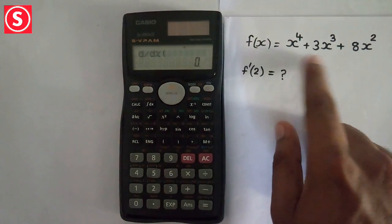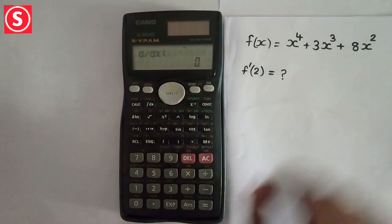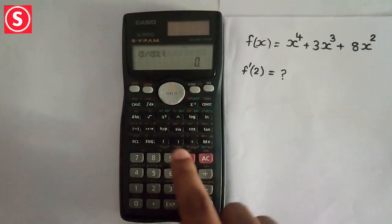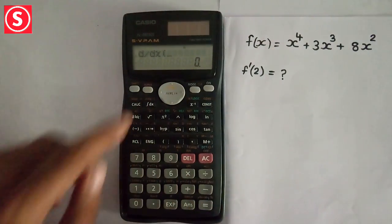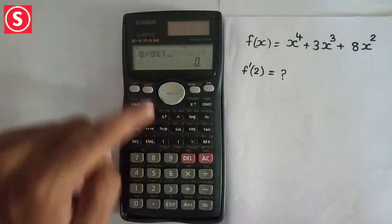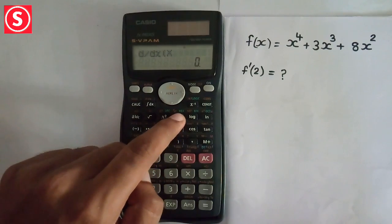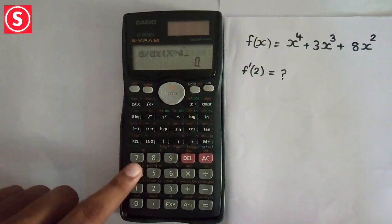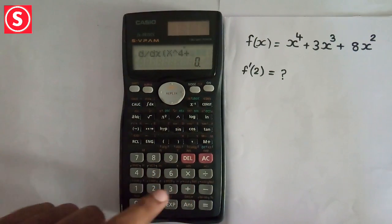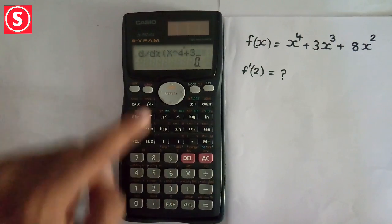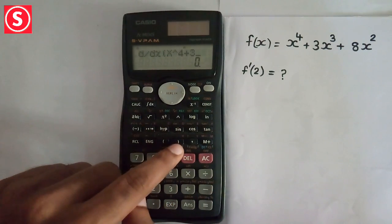First, we need to type this equation. For x, press alpha then press on the closing bracket. We get x, then raise to 4, plus 3, again alpha then the closing bracket, x raise to 3, plus 8, again alpha then the closing bracket.